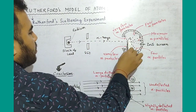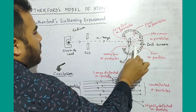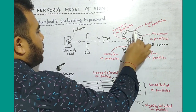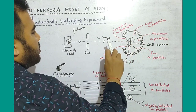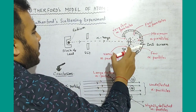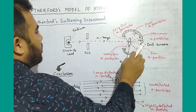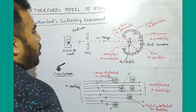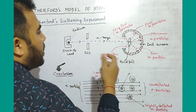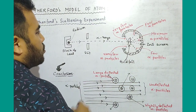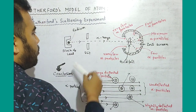When the alpha rays strike the metal foil, they are detected by the zinc sulphide screen. When alpha particles hit the screen, a flash of light is produced. This allows us to detect the alpha particles.